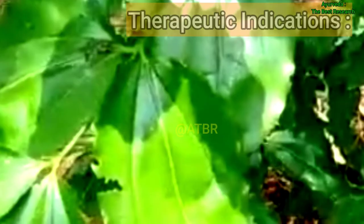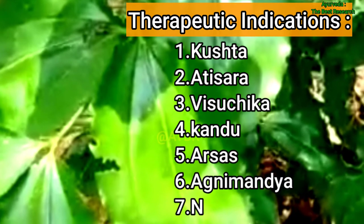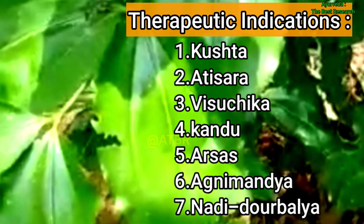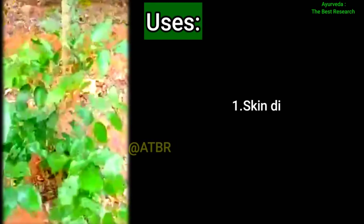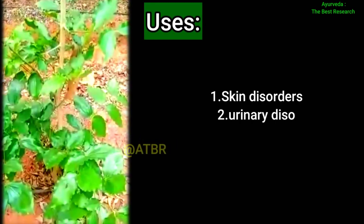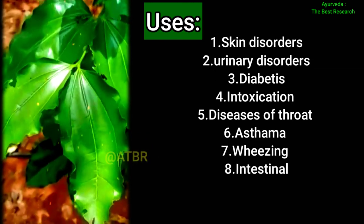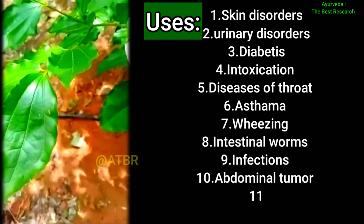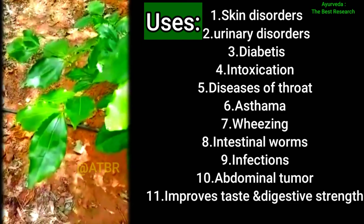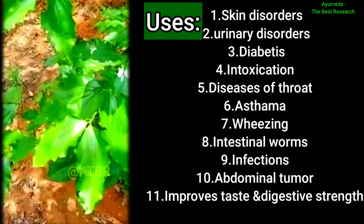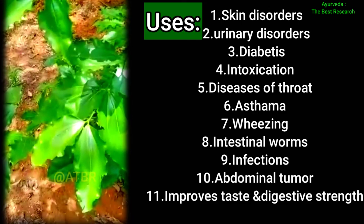Rogagnata, that is therapeutic indications, are: kushta, atisara, vishuchika, kandu, arsha, agnimandya, and nadidaurbalya. Kupilu drug is also helpful in skin disorders, urinary disorders, diabetes, intoxication, diseases of the throat, asthma, wheezing, intestinal worms, infections, and abdominal tumour. It also improves taste and digestive strength.